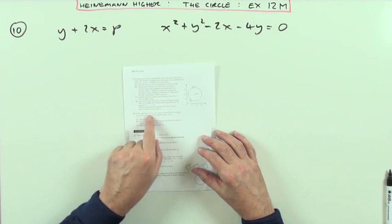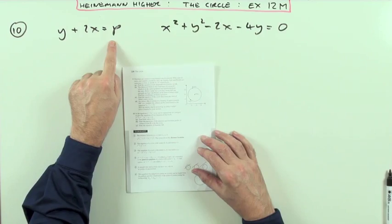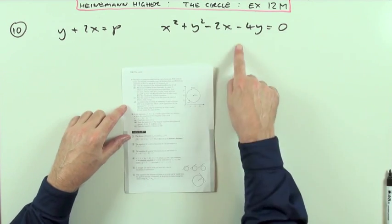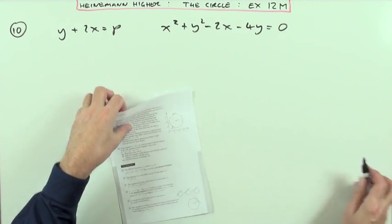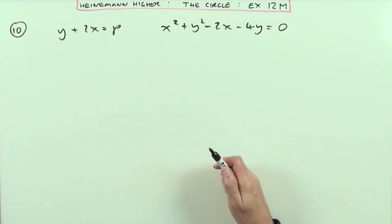Question 10. In this equation, P can take two integral values to give the equations of two tangents to the circle. Well, you can see what's happening here. What's the first part? Find both values of P.